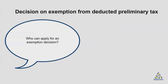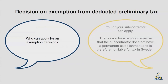So who can apply for an exemption decision? Either you or your subcontractor can apply. The reason for exemption may be that the subcontractor does not have a permanent establishment and is therefore not liable for tax in Sweden. A permanent establishment for a non-Swedish construction company is when the construction project in Sweden runs for a certain period of time, commonly either 6 or 12 months.